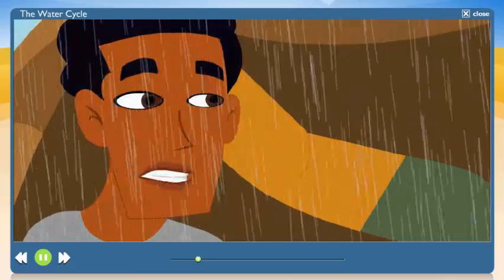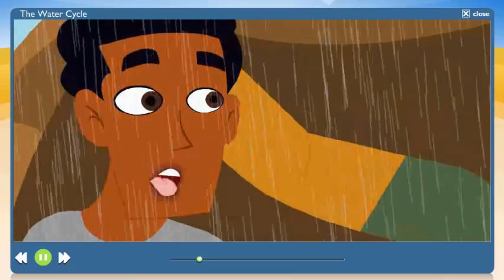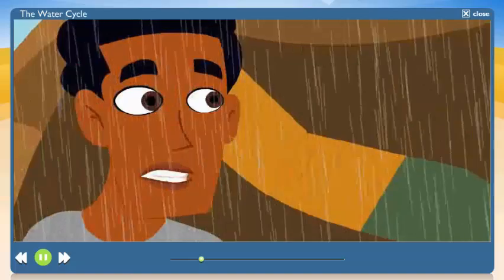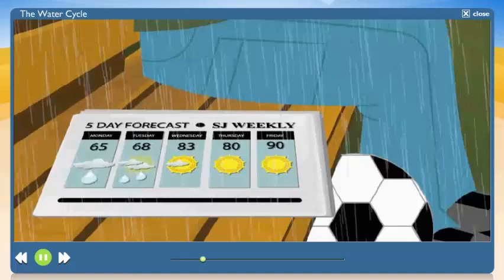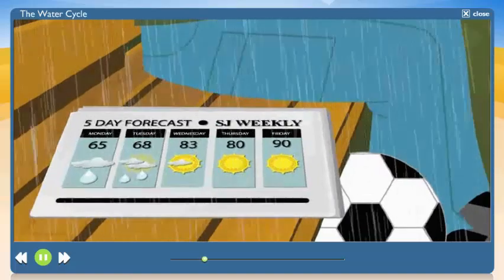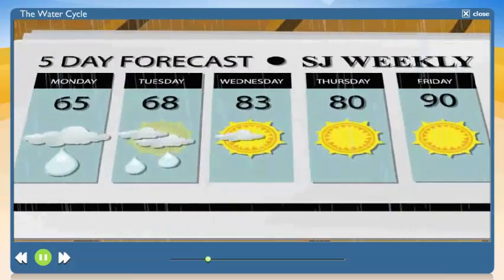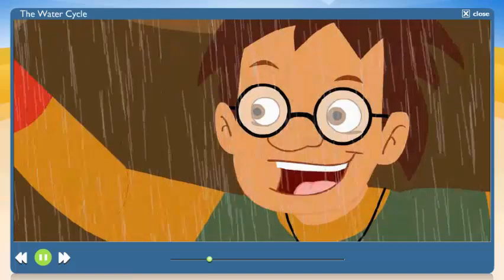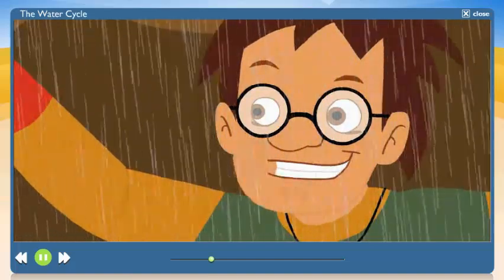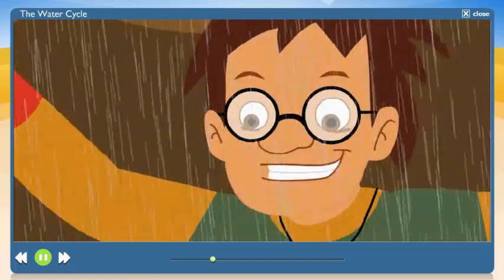Well, if this precipitation doesn't stop soon, we'll be playing slip and slide instead of soccer tomorrow. Don't worry, RJ. Tomorrow's supposed to be hot and sunny. Those puddles will be history by game time. How can you be sure? Let's just say I'm counting on the water cycle to do its stuff. What comes down must go up.